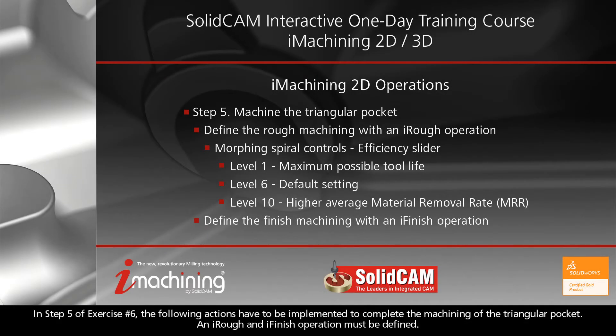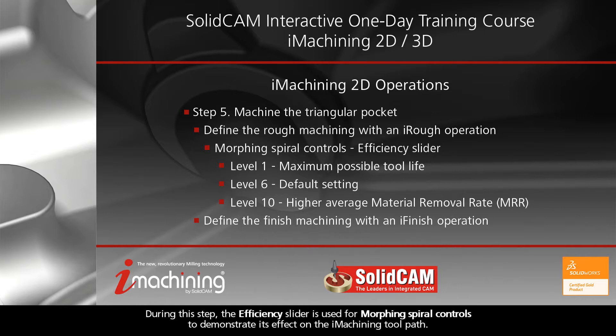In step 5 of exercise number 6, the following actions have to be implemented to complete the machining of the triangular pocket. An iRough and iFinish operation must be defined. During this step, the efficiency slider is used for morphing spiral controls to demonstrate its effect on the iMachining toolpath.